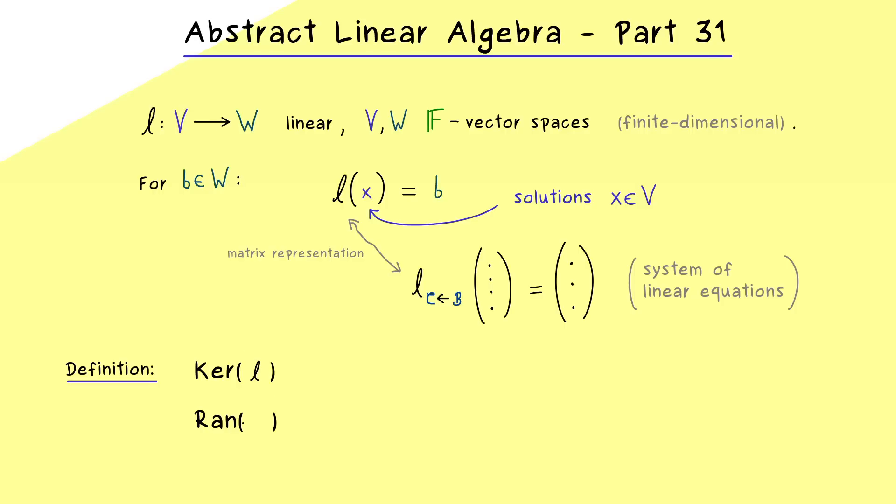In fact, you might already know what we need is the kernel and the range of the linear map l. These two things are not complicated at all because the kernel is just the set of all elements in V that are sent to zero by l. In other words, it's given by the solution set of the linear equation where the right hand side is given by the zero vector in W. So please remember that also in this general context we speak of the kernel.